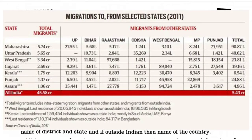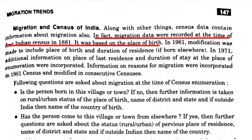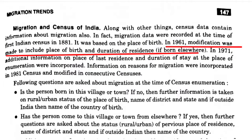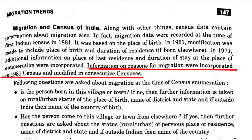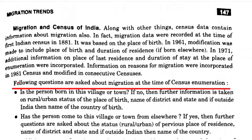Migration is also taken into account while collecting the census. Migration was recorded in the first Indian census of 1881, which was based on the place of birth. In 1961, modifications were made including the place of birth and the duration of residence if born elsewhere. In 1971, modifications were made on the place of last residence and duration of stay at the place of enumeration. In 1981, modifications were made on the reason for migration, and many more modifications have been made in consecutive census records.